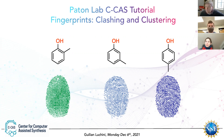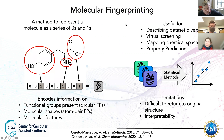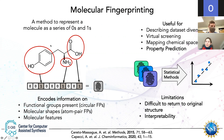Basically, a fingerprint is going to give us a unique encoding of a molecule. Molecular fingerprints are typically represented as a series of zeros and ones — a one-hot encoded embedding of a molecule. There are different algorithms and types of fingerprints. I'm going to be talking about Morgan or circular fingerprints today.